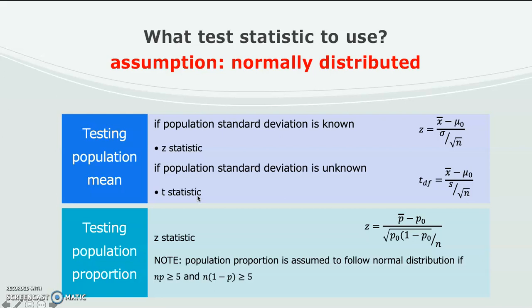So when do we use between the two? We use T test if population standard deviation is unknown, and we use the sample standard deviation instead to calculate the test statistic. If population standard deviation is known, we use the Z statistic with the following formula.